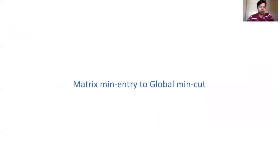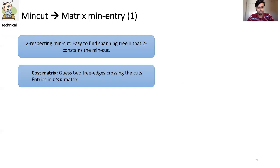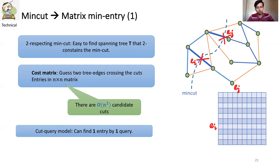Let us now connect the puzzle with the problem in hand which is the two respecting min cut. Suppose one already knows which spanning tree T for which we have to find the minimum two respecting cut. Once we fix such a tree T, this naturally gives rise to a cost matrix. It is an n cross n matrix. Consider the following graph with the spanning tree with the fat blue edges. The ijth entry is the value of the min cut which respects the ith and the jth edge of the tree. So there are n squared candidate cuts from which we have to find the minimum. Note that in the cut query model we can find any entry of the cost matrix with just one cut query.